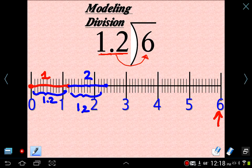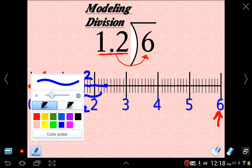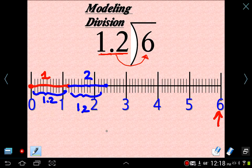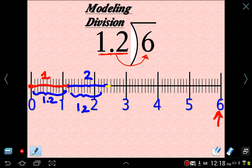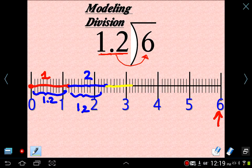Alright, let's keep going. Again, I'm going to count. It's easier if I just count 12 tenths. 1, 2, 3, 4, 5, 6, 7, 8, 9, 10, 11, 12. So there's our third 1.2.